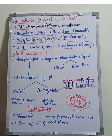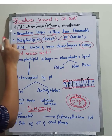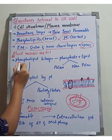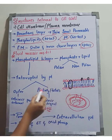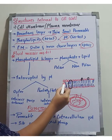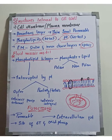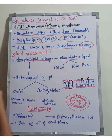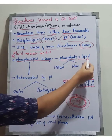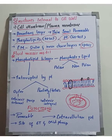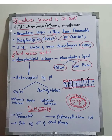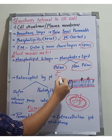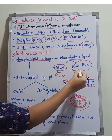The fluid mosaic model describes the plasma membrane. It is made by a phospholipid bilayer. There are two ends of phospholipids: polar ends and non-polar ends. The polar ends react with water molecules, while the non-polar ends do not.